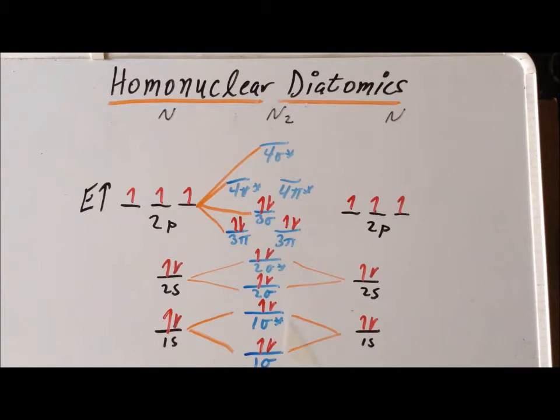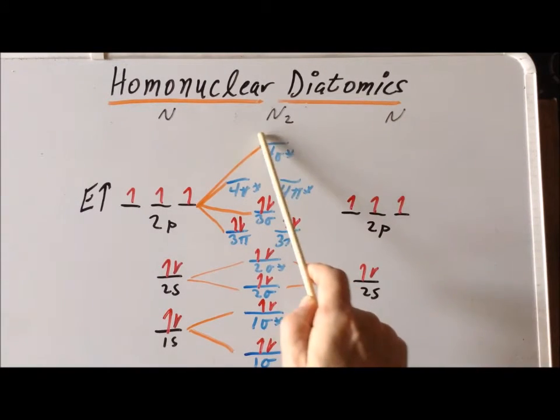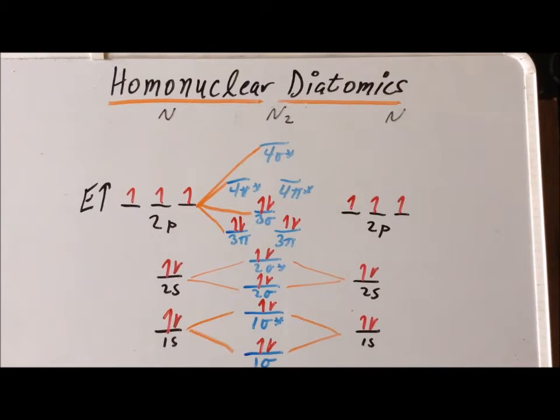So we know that for example, in carbide, the carbide unit has a triple bond, which is short and very strong, so it's very difficult to break. We also notice the same thing for nitrogen. Nitrogen features a triple bond, which is very short, very strong, and extremely difficult to break.